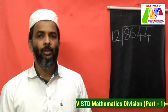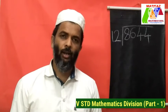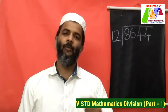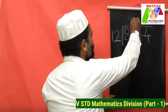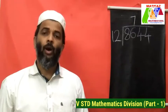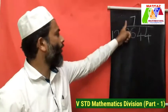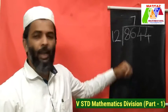We know that 10 times 12 would be 120. 5 times 12 is 60. 6 times 12 is 72. 7 times 12 is 84. So write 7 as a quotient. What is the next step? We have to multiply the quotient and the divisor. 7 into 12 is 84.